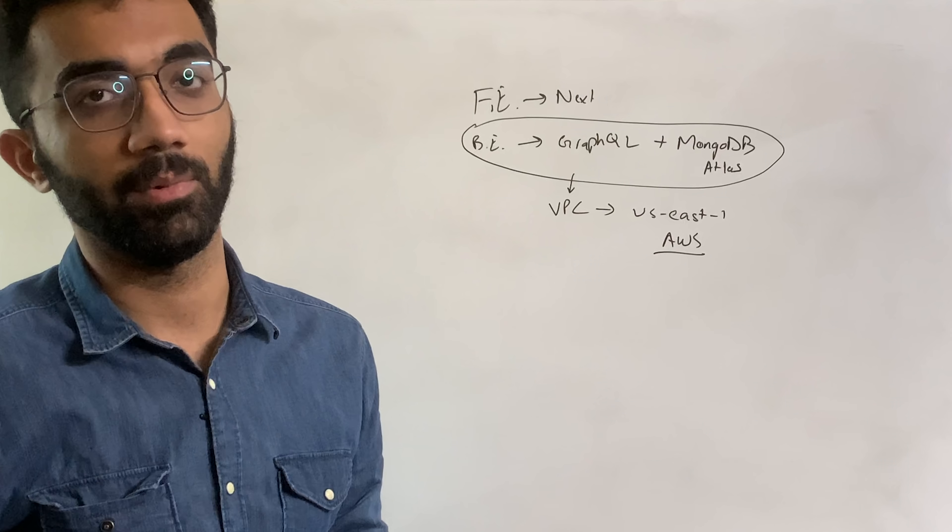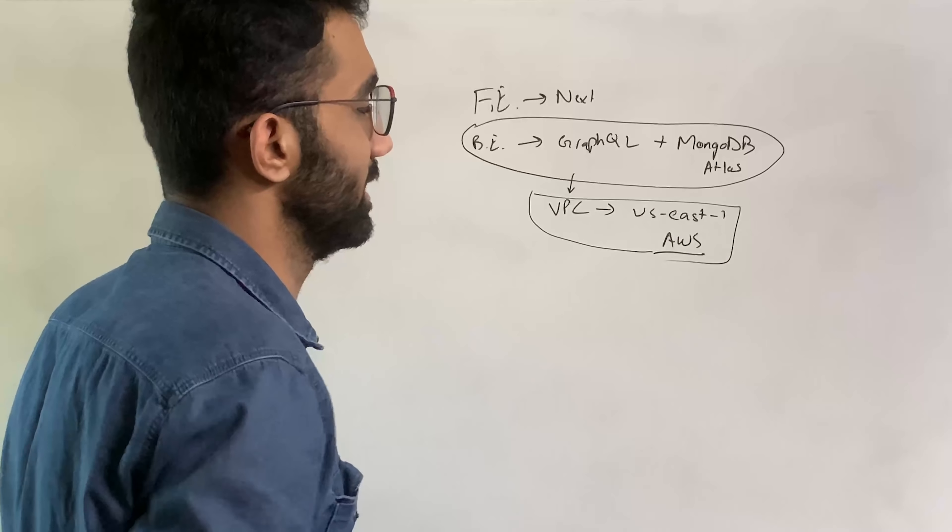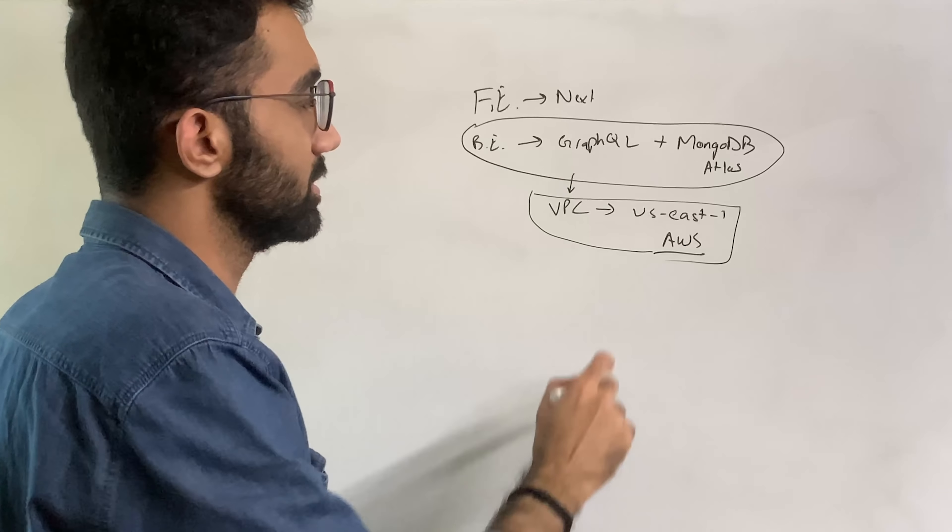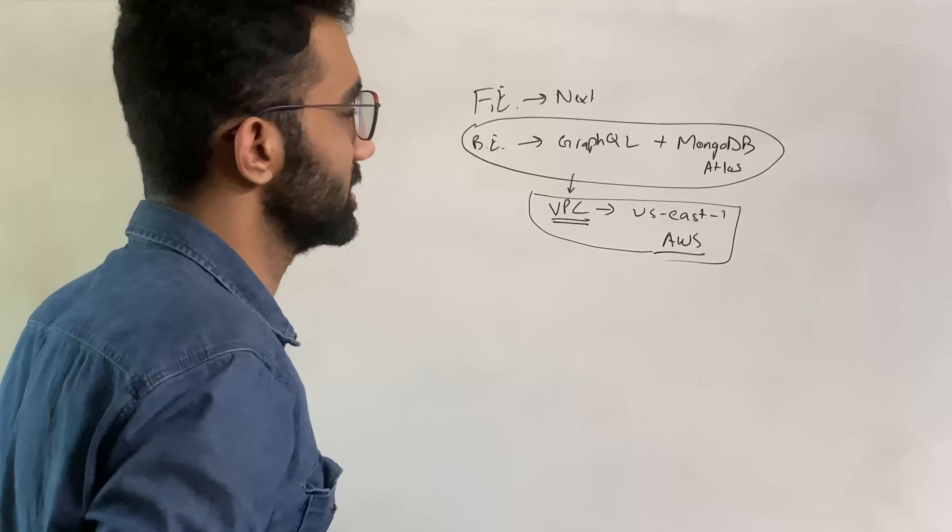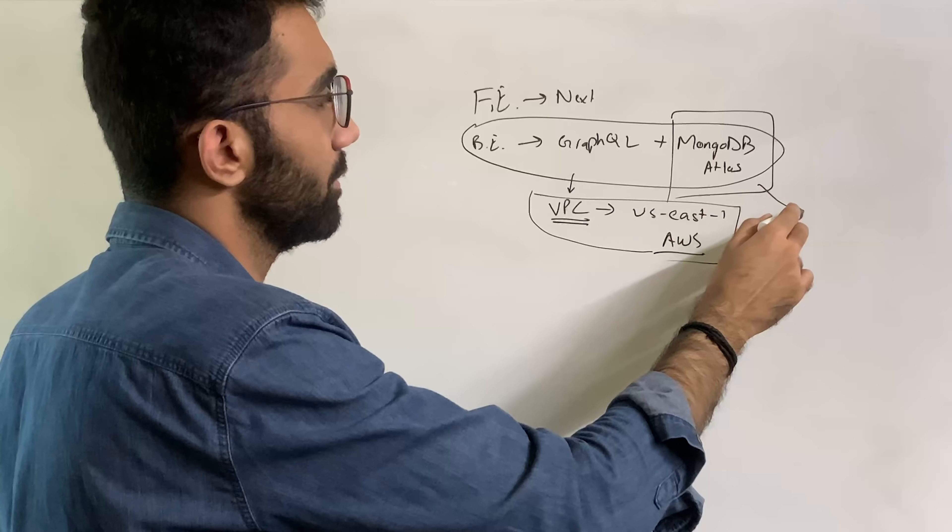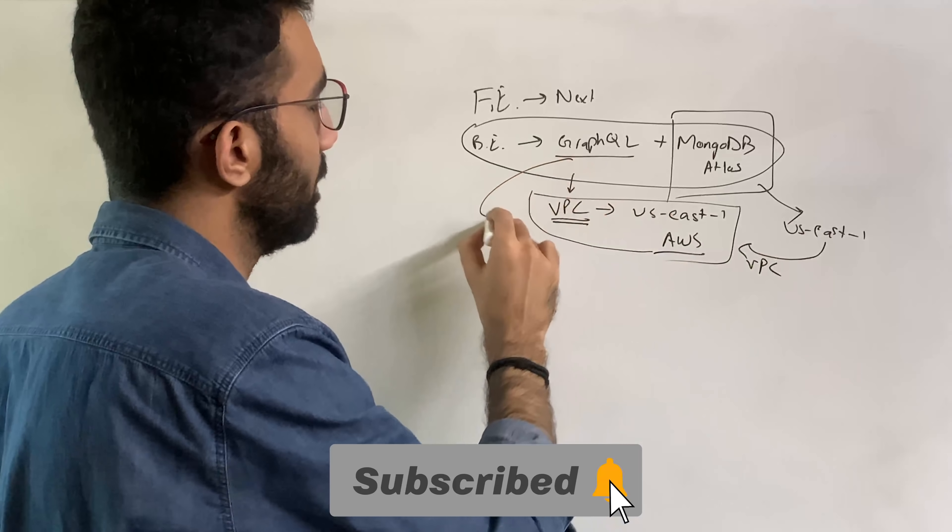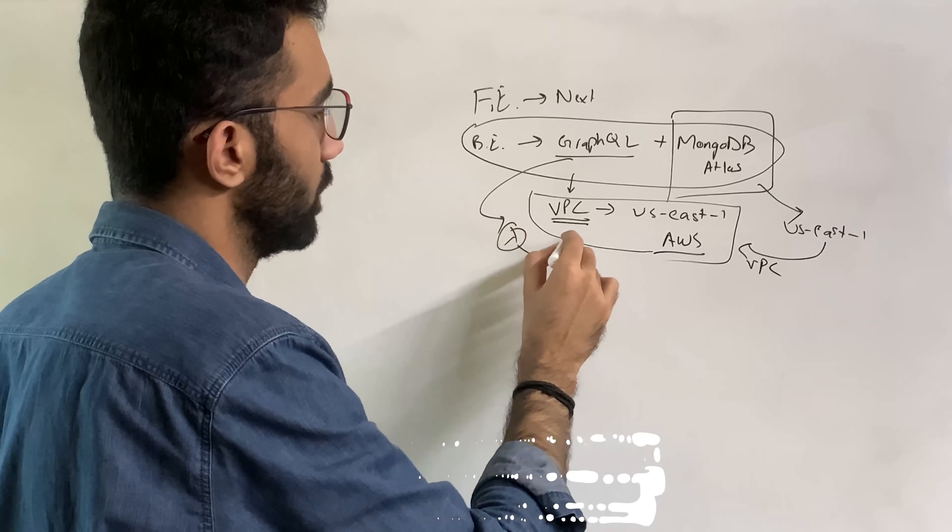This VPC is in US East 1 AWS region which went down just today. Parts are still down right now, or at least in degraded performance. This VPC is in US East 1. This means MongoDB Atlas is deployed in US East 1 and VPC peered into Codedam, and the GraphQL Lambdas are deployed in US East 1.